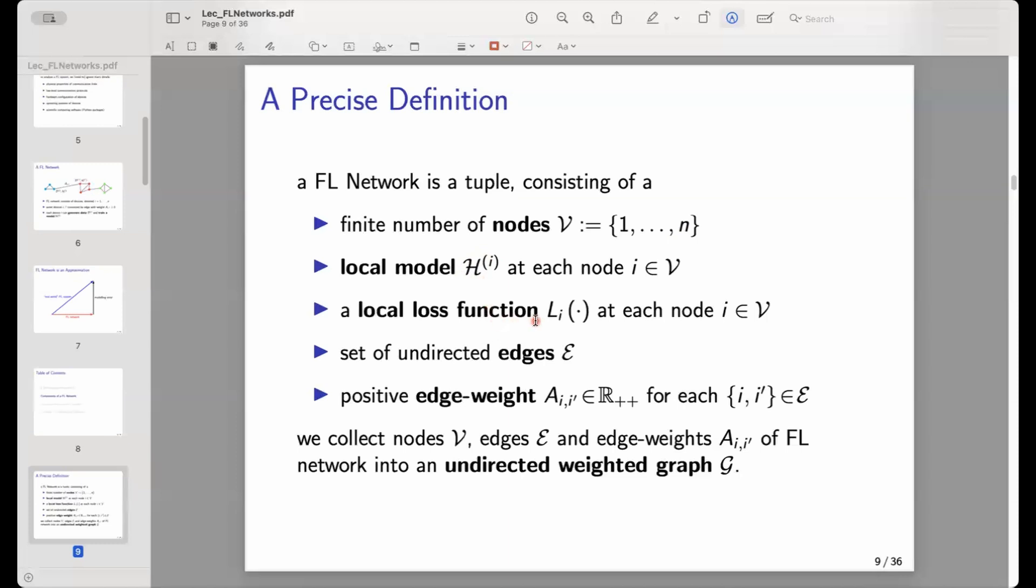In order to train a model, like in basic machine learning, we need some way to measure the usefulness of model parameters or of a hypothesis out of this model. And for this we need a local loss function. So each node also carries a local loss function.